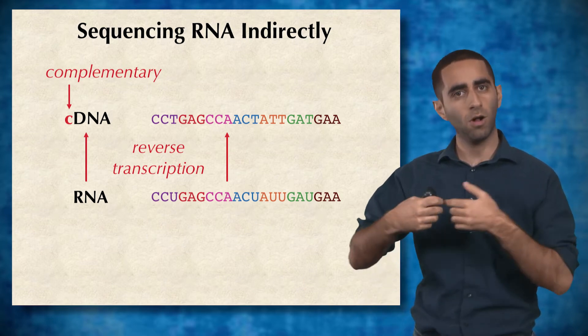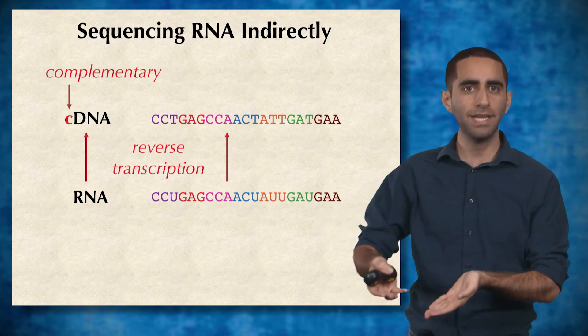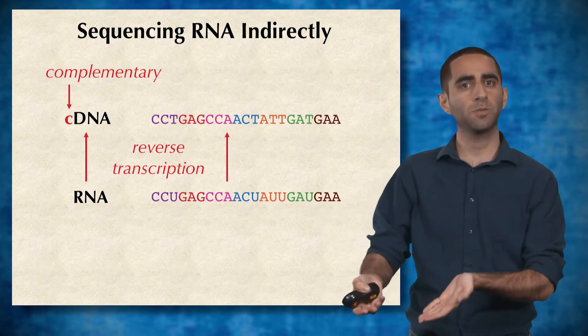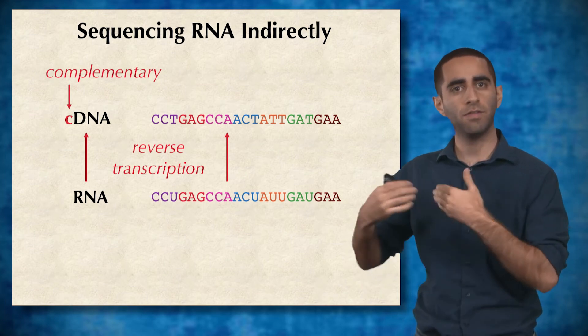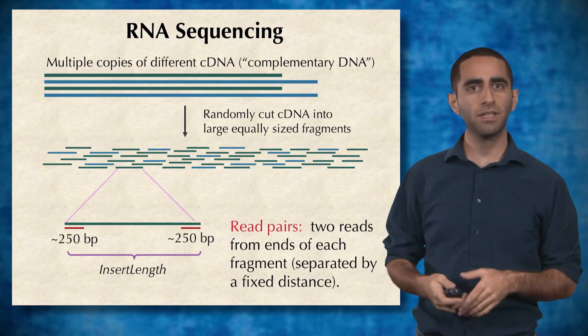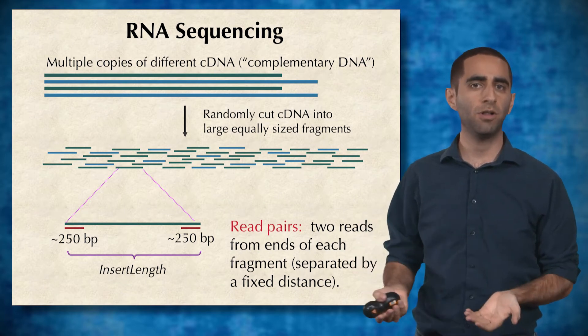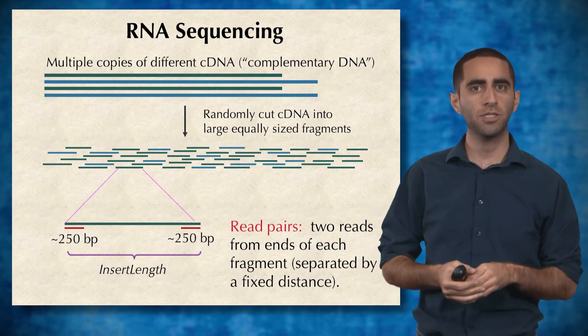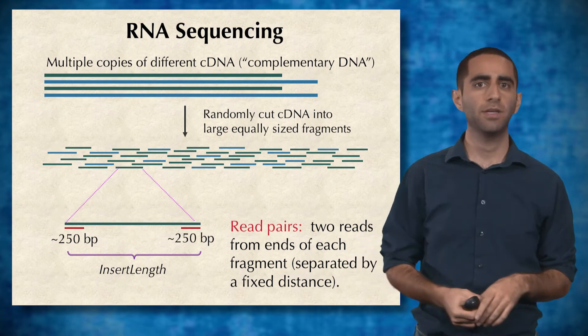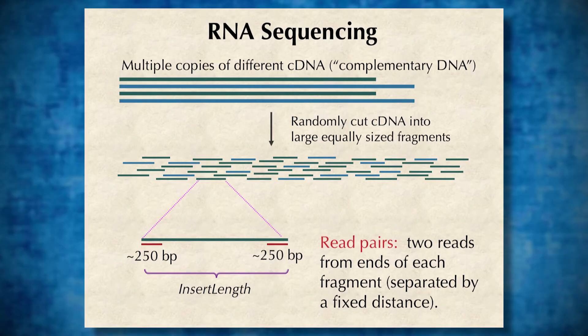Using this technique, we can take all of our RNA in a given sample, convert it back into cDNA, and then sequence the corresponding cDNA to get a proxy measurement of the RNA. We have multiple copies of different cDNA molecules, where each cDNA molecule corresponds to a single RNA fragment. Just like any other sequencing experiment, we chop the cDNA into equally sized tiny pieces and sequence them to generate read pairs — fragments of known length with two reads on either end whose exact sequence we know.